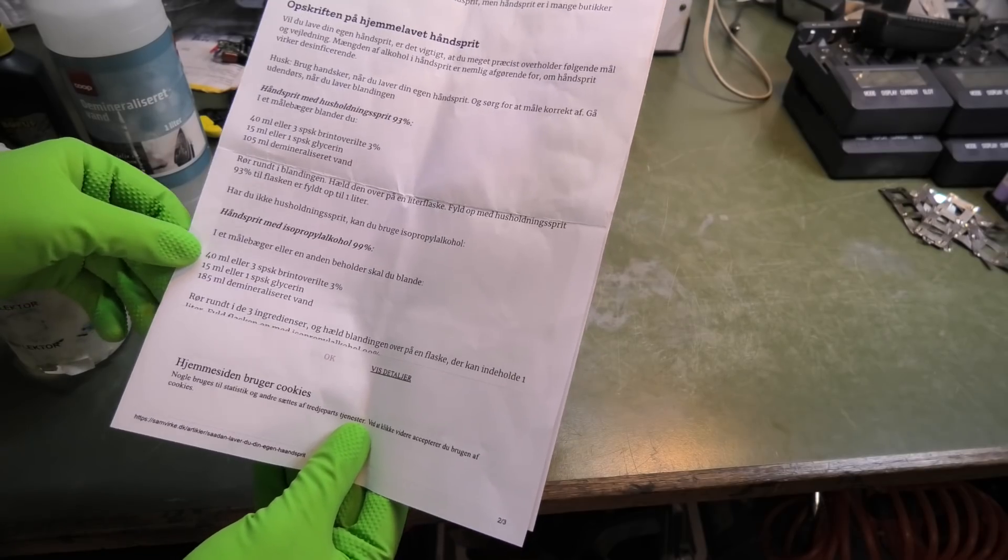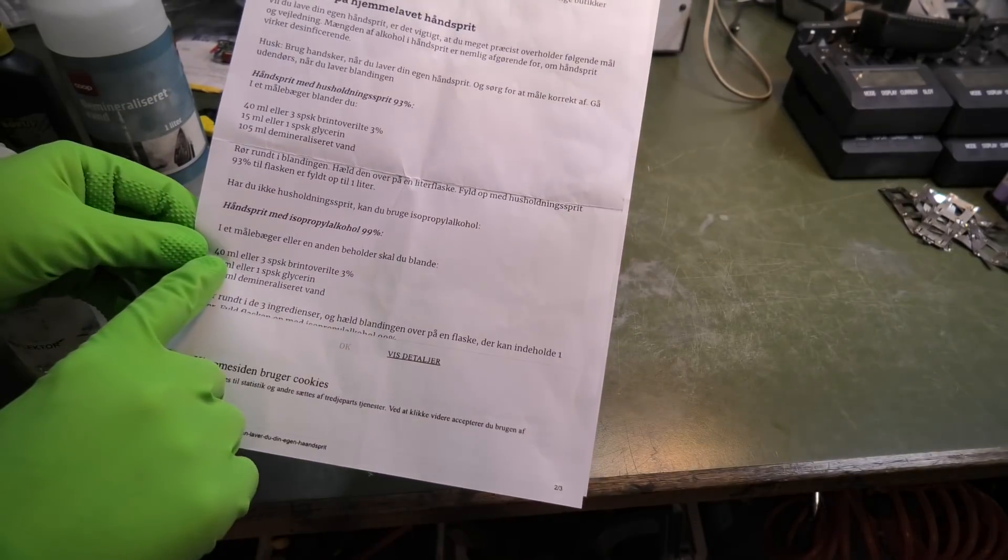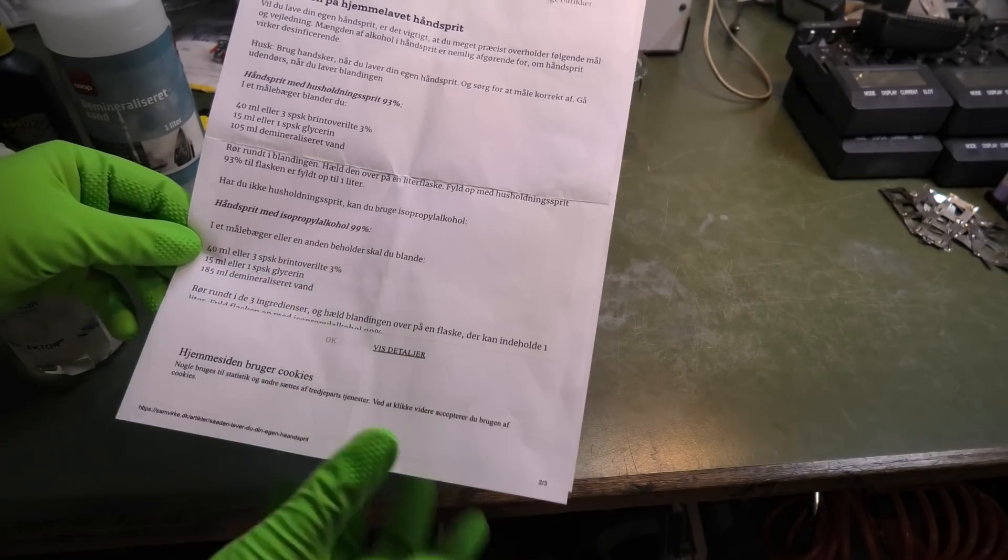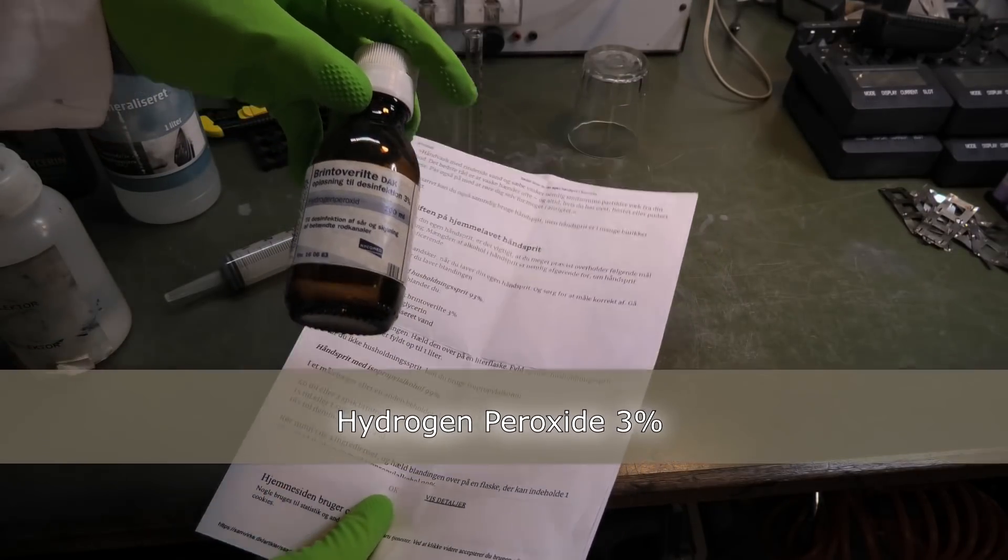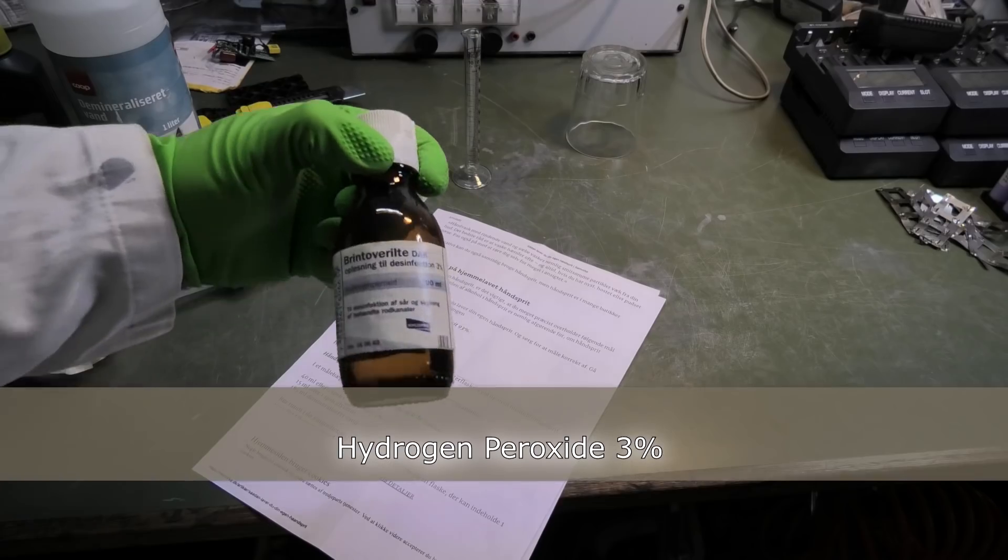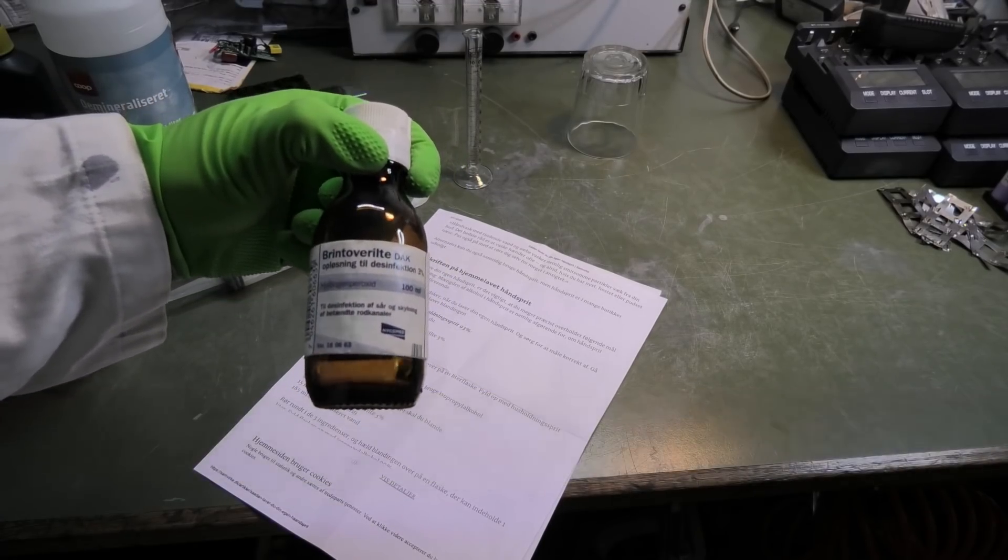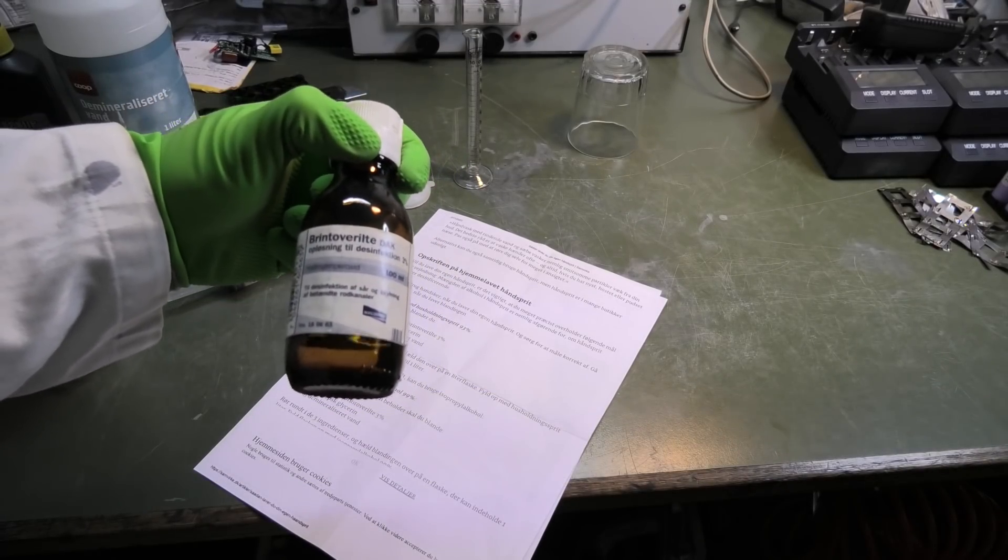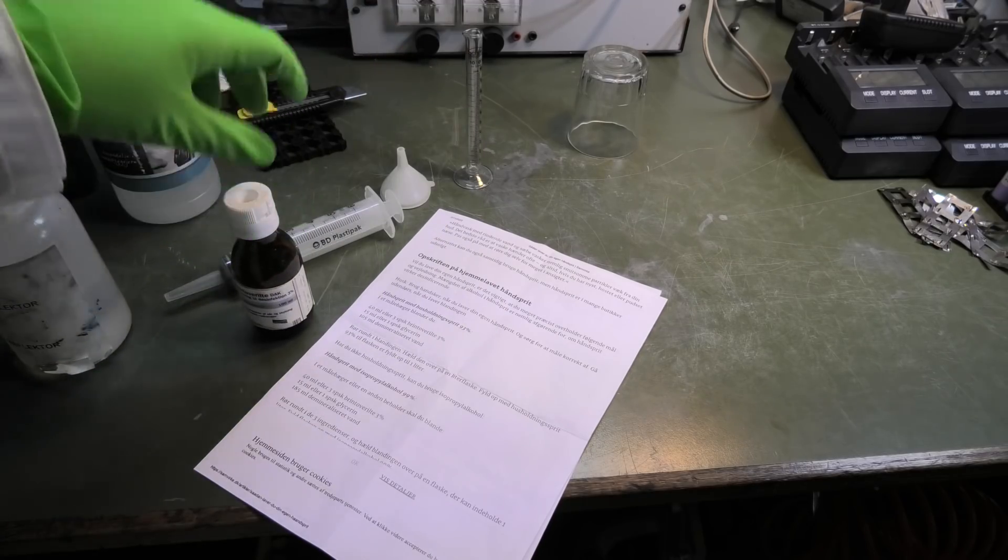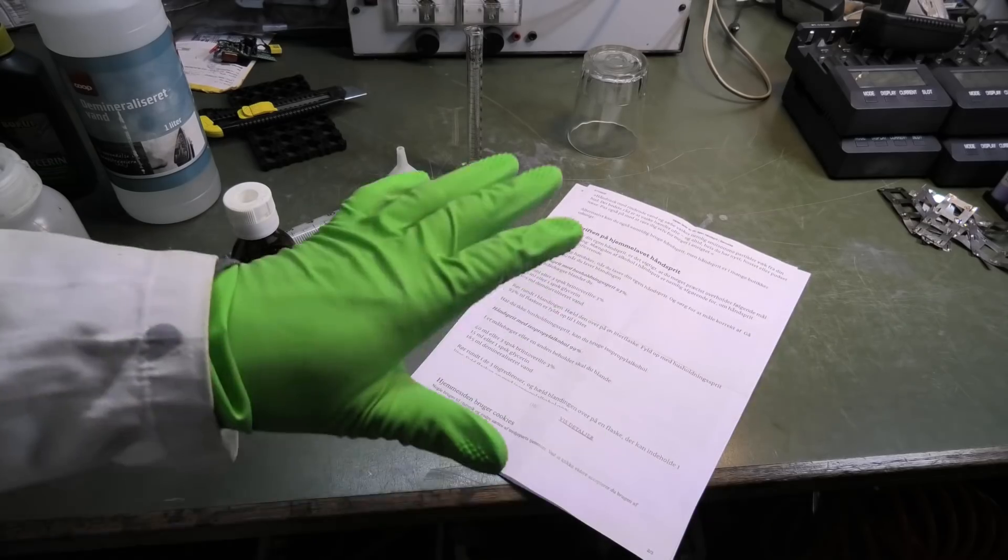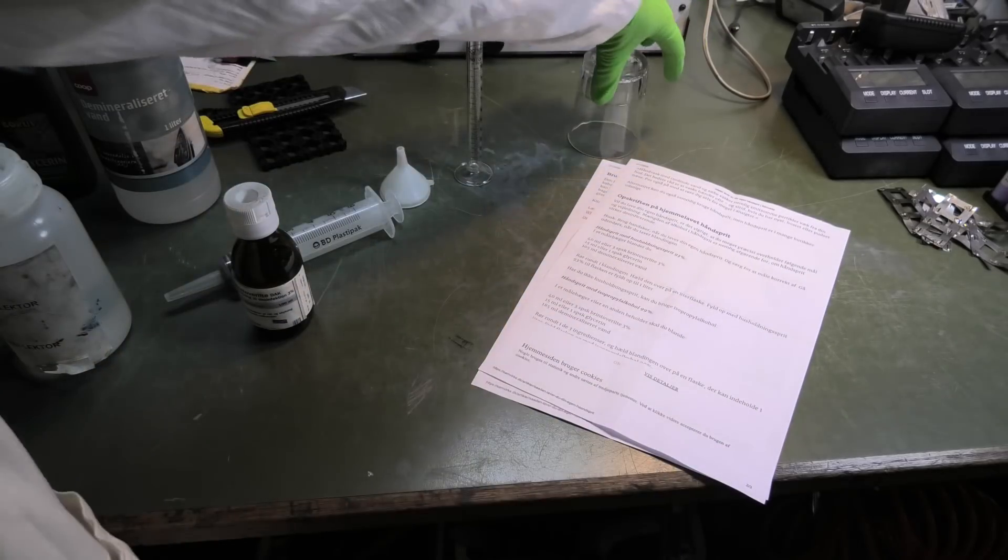You can see the recipe down here. For making one liter I would need 40 milliliters of this hydrogen peroxide. I don't have a lot of that so we need to measure how much I actually have and then adjust the recipe.